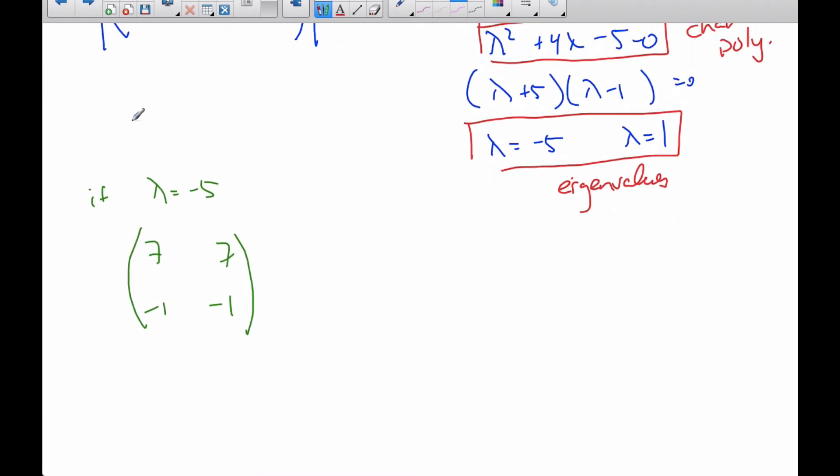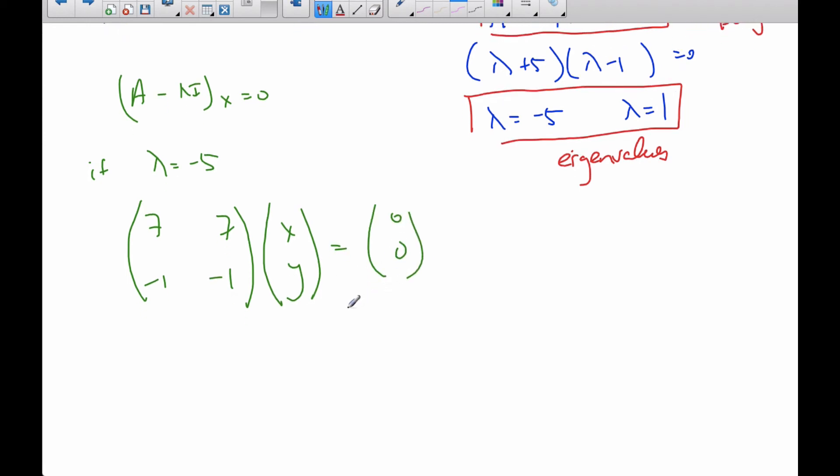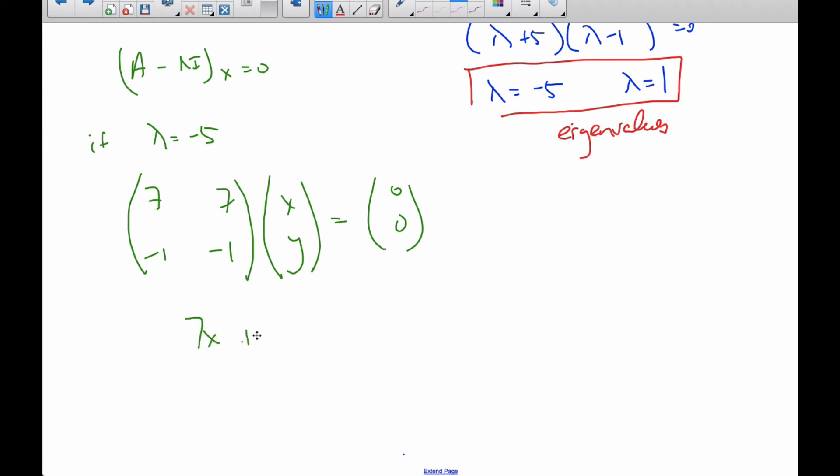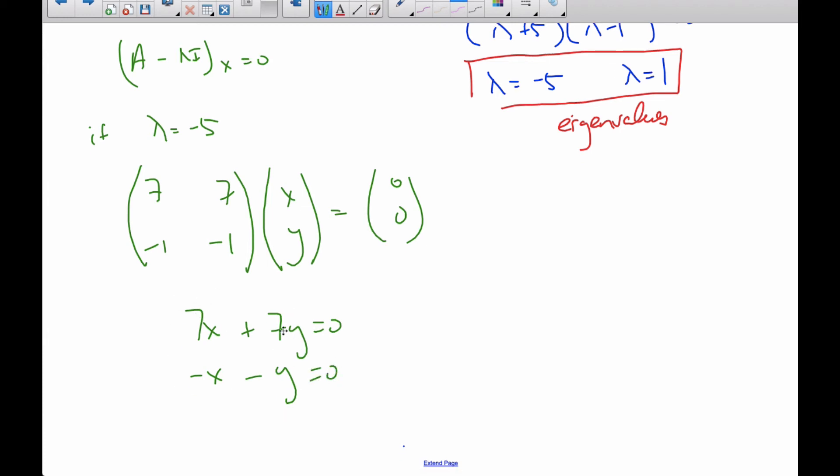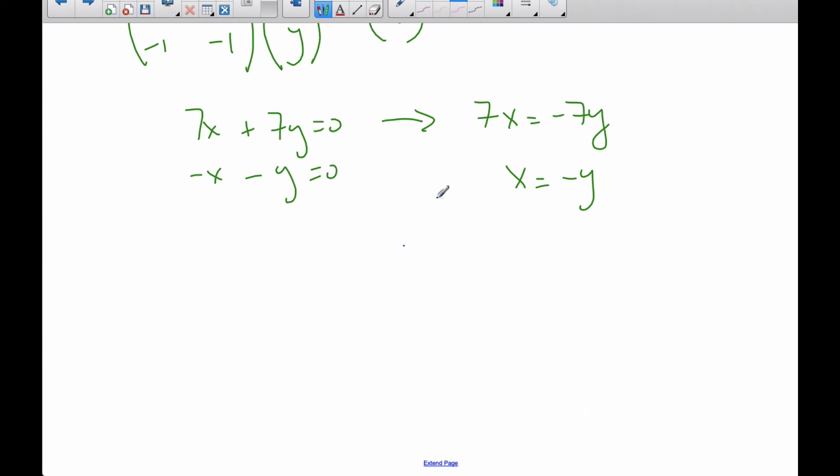Well, if I'm going to do that, if I'm going to solve A minus lambda i times x is equal to 0, well, I have to times it by x, and I know it has to be 0. So, I multiply it out, I get 7x plus 7y is 0, and I get a negative x minus y equal to 0. Now, if you look carefully in these equations, they're the same equation, just different multiples of the same equation. If you get that, it means you're on the right track. That always happens. So, if I take this now, I know that 7x is equal to negative 7y, and x is equal to negative y. And so, this will also give me the same thing, that x is equal to negative y.